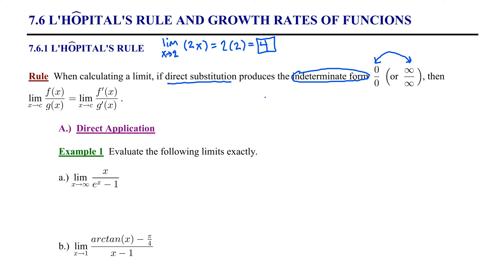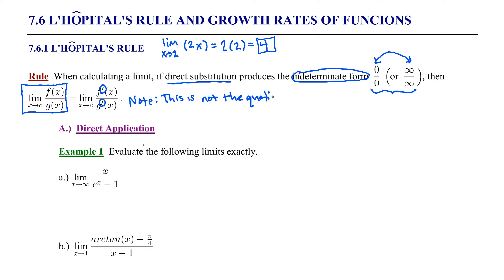To calculate the limit as x approaches c of f(x) divided by g(x), if I plug in my target value c and I obtain one of those indeterminate forms, then I can calculate the limit by taking the ratio of the derivatives. Notice I've got f prime in the top and g prime in the bottom. Please note this is not the quotient rule. My purpose is not to find the derivative of this function—my purpose is to calculate the limit. I'm using the derivative of the top and the bottom to calculate the limit.